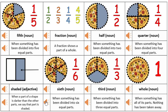Sixth: when something has been divided into six equal parts. Third: when something has been divided into three equal parts. Whole: when something has all of its parts — nothing has been taken away.